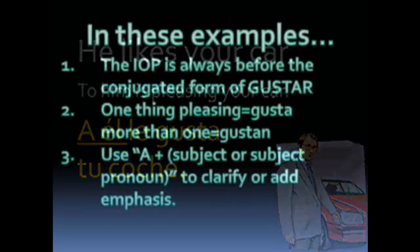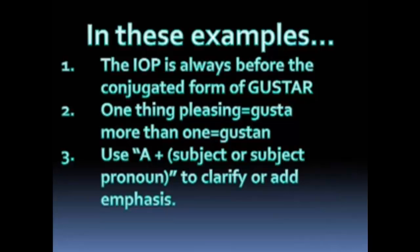There are three things to observe in these examples. Number one: the indirect object pronoun (IOP) is always before the conjugated form of the Spanish verb gustar. Number two: when only one thing is pleasing, conjugate as gusta; when there is more than one item pleasing, conjugate as gustan — singular gusta, plural gustan. If you're unsure of the difference between gusta and gustan, check out a podcast on basic present tense conjugations — it's like 'él habla' vs. 'ellos hablan.'